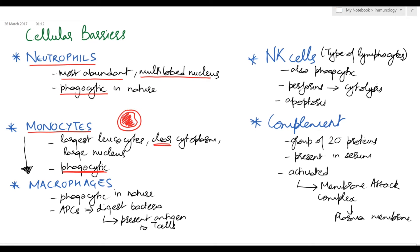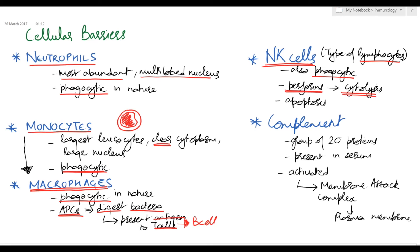Monocytes mature into macrophages, which are also phagocytic and are known as antigen-presenting cells. What they do is digest the bacteria and then present the antigen to T cells, so the T cell will take further action and help B cells in the production of antibodies, allowing acquired immunity to come into response. NK cells are a type of lymphocyte with three mechanisms of action: they are phagocytic, they produce perforins which make pores in the pathogen's cell wall, and they release enzymes that cause cytolysis of the cell.